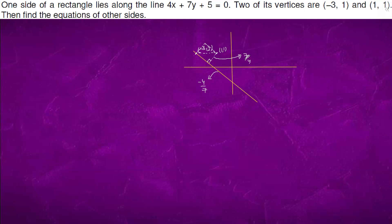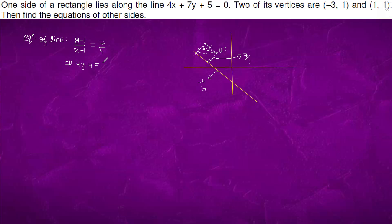m1 into m2 equals to minus 1. Now we can write the equation of this line which is passing through (1, 1). The equation of the line will come out to be: y minus 1 over x minus 1 equals to 7 by 4. Solving further: 4y minus 4 equals 7x minus 7, so this gives 4y plus 3 equals 7x.